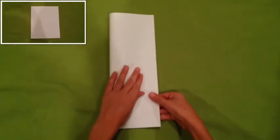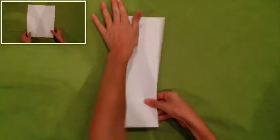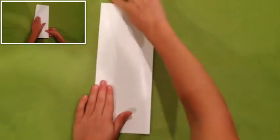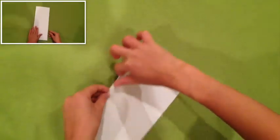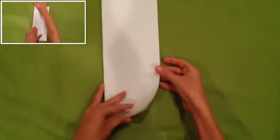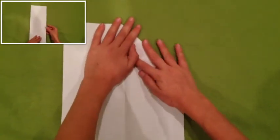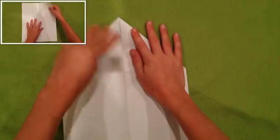You want to fold it hot dog style, as people call it, like that. Make sure it's really neat, maybe even run your fingernail through it. Then you open it up and you make triangles like this on each side.